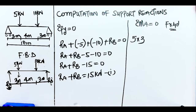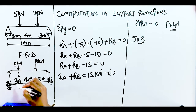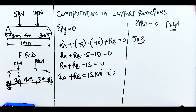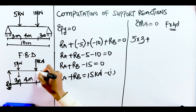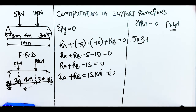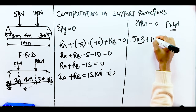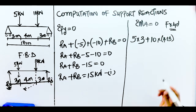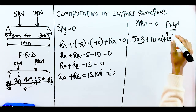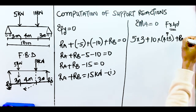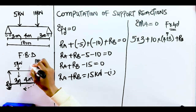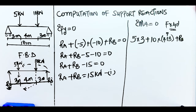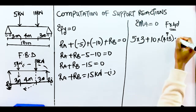The 5 kN force acts clockwise about RA — clockwise moments are positive — so we have 5 × 3, since 3 meters is the perpendicular distance from the 5 kN load to RA. The 10 kN force also acts clockwise, at a distance of 4 + 3 = 7 meters, giving 10 × 7. RB acts anticlockwise — a negative moment — at the total distance of 10 meters, giving −RB × 10 = 0.